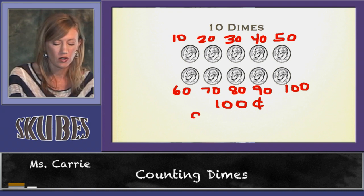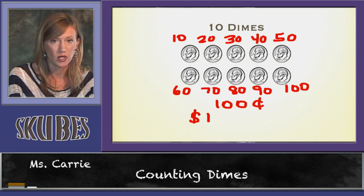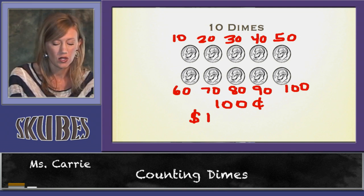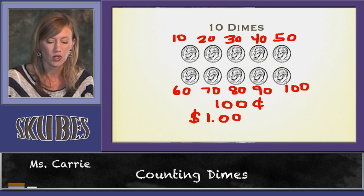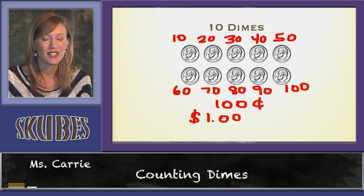So we'll write our dollar sign and our one, which represents one dollar, our decimal, and our two zeros for no change left over. That concludes our lesson today on counting dimes.